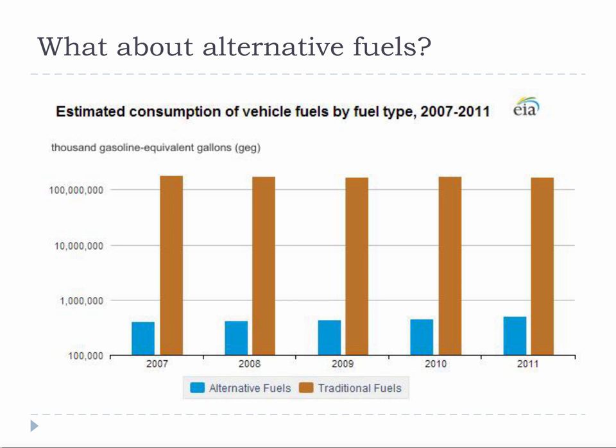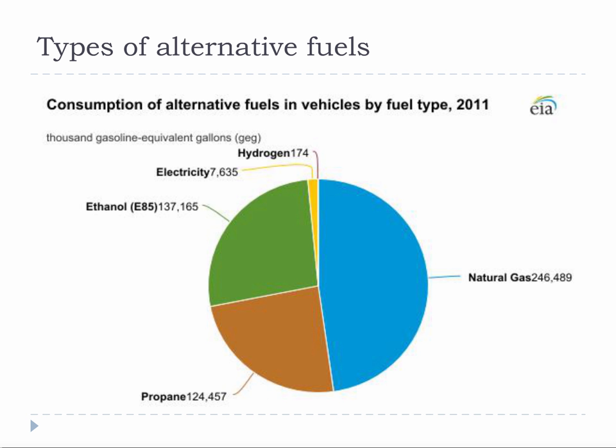So what about alternative fuels other than gasoline? It is hard to get a feeling for how many of these vehicles are out there, but this graph provides a pretty fair comparison. The reality is that gasoline and diesel are far, far more common than anything else, somewhat because of the fuel paradigm we just discussed and also because of the available vehicles. When we discuss alternative fuels, we are primarily talking about natural gas, propane, ethanol, electricity, and a little bit of hydrogen.